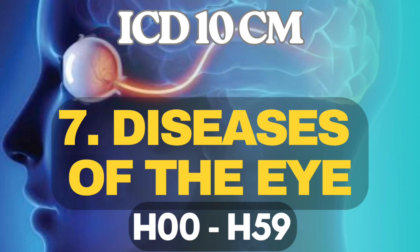Hi, in today's video we are going to see the next chapter in the ICD-10CM. We have already covered 6 chapters of chapter-specific coding guidelines, and today we are in the 7th chapter — Diseases of the Eye and Adnexa, H00 to H59 series. This is Surya Johnson, your medical coding guide.